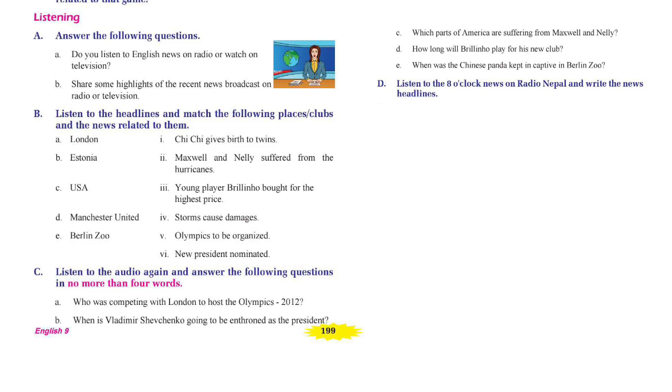Good evening. I'm Jed West and this is the 6 o'clock news. Headlines. London has won the race to host the Olympics in 2012. Estonia has elected a new president. Hurricanes Maxwell and Nelly have struck the east coast of America, in particular the Florida Keys. Thousands expected to be injured. Manchester United have signed the prodigious young talent Brillinho from San Paolo for a record 42 million euros. Chi-Chi the Panda has given birth to twins in Berlin Zoo.